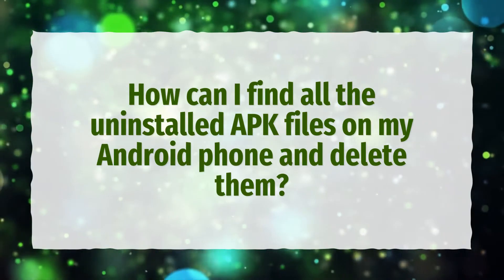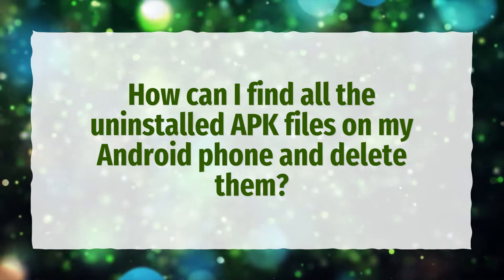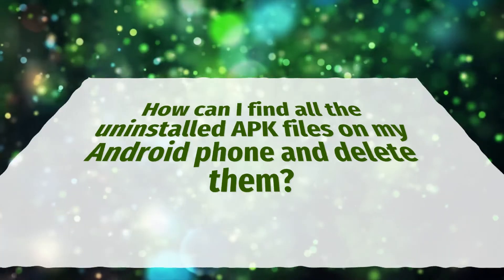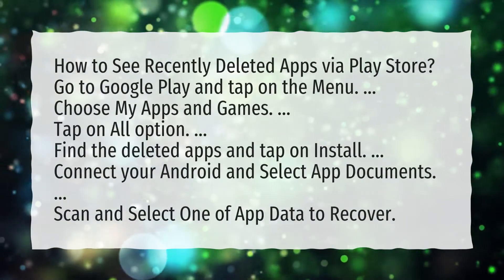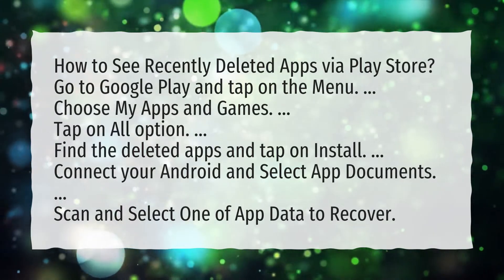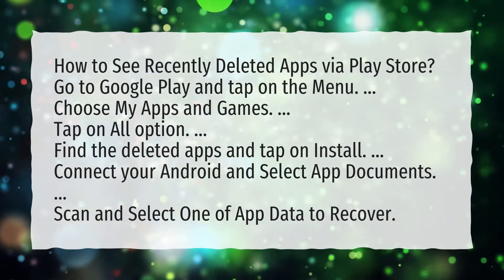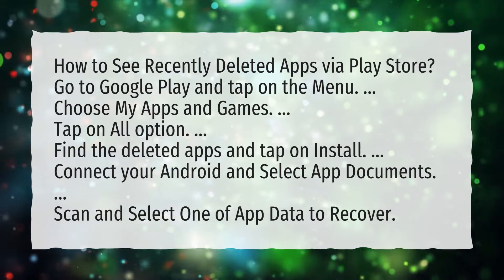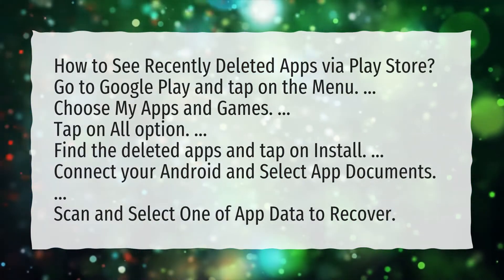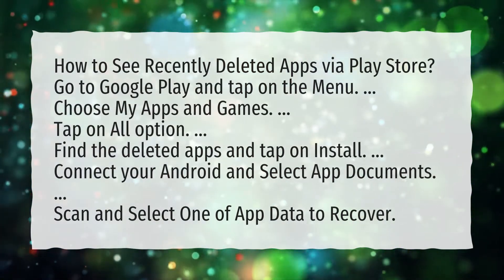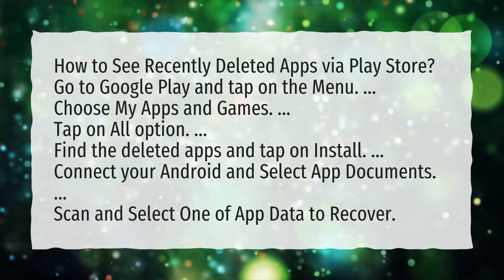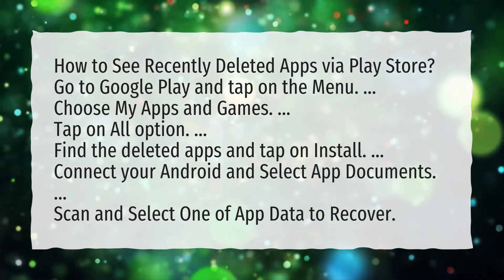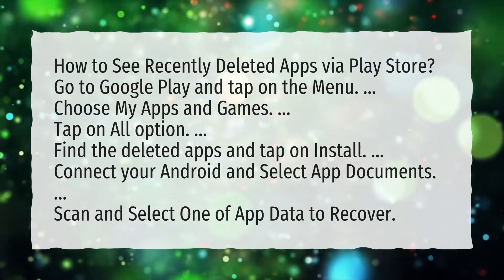How can I find all the uninstalled APK files on my Android phone and delete them? How to see recently deleted apps via Play Store. Go to Google Play and tap on the menu. Choose my apps and games. Tap on all option. Find the deleted apps and tap on install. Connect your Android and select App Documents. Scan and select one of app data to recover.